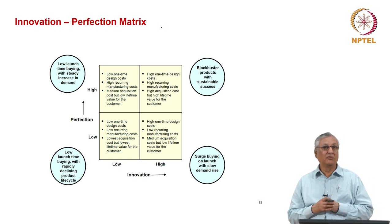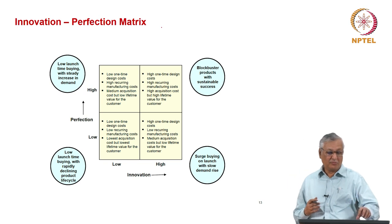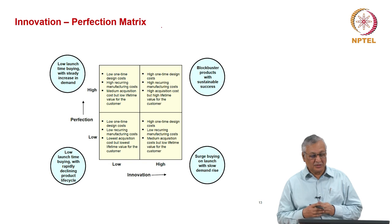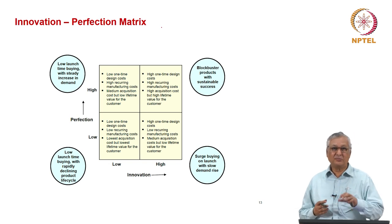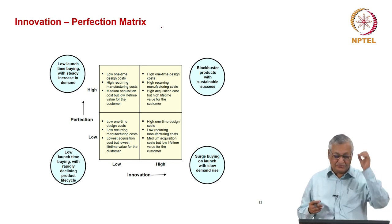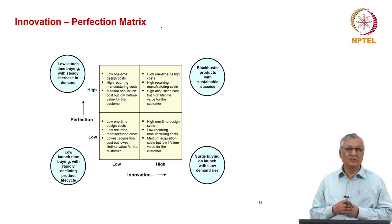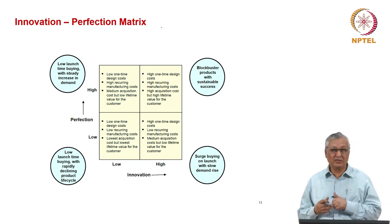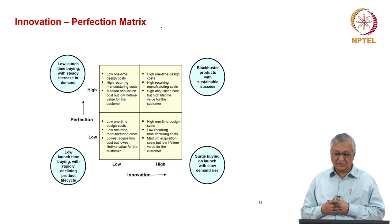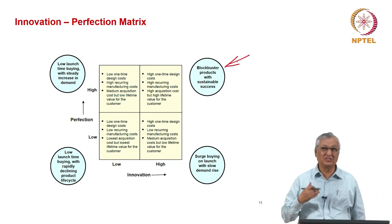So, these are the two variants. One would say that most products fall into this kind of surge-buying mode or low-buying mode going up with the passage of time. But when we speak of Blockbuster products, they are the products which have high innovation and also high perfection. They have high one-time design costs, high recurring manufacturing costs, but they offer the highest lifetime value for the customer despite the high acquisition cost. These are the Blockbuster products with sustainable success.